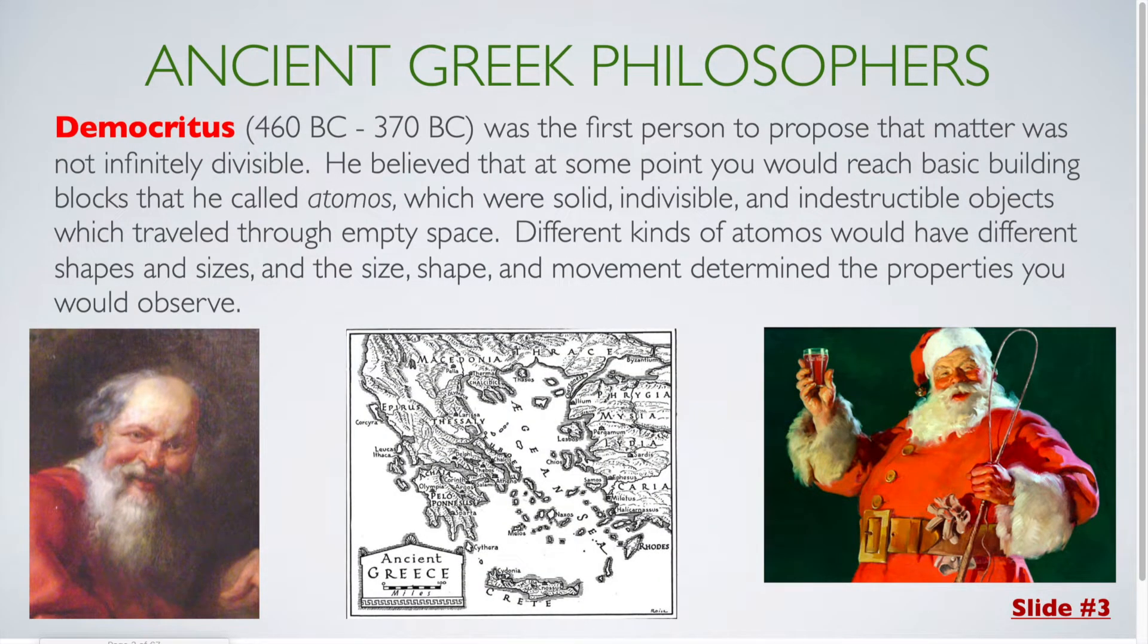Another ancient Greek philosopher, Democritus, was the first person to propose that matter was not infinitely divisible. He believed that at some point you would reach basic building blocks that he called atomos, atoms, which were solid, indivisible, and indestructible objects which traveled through empty space. Different kinds of atomos would have different shapes and sizes, and the size, shape, and movement determined the properties which you would be able to observe.